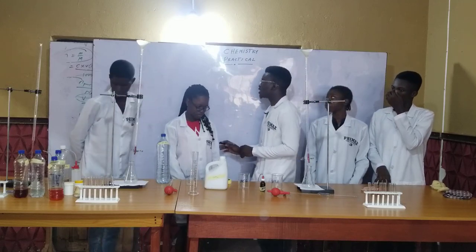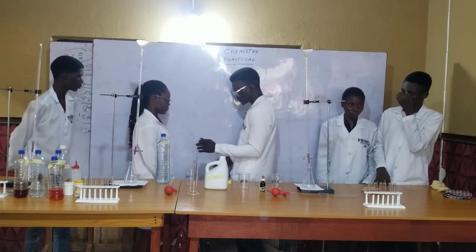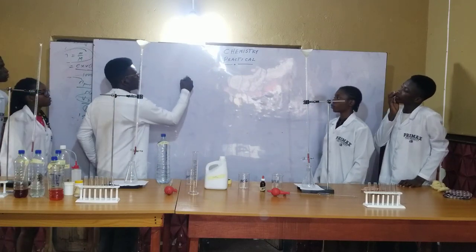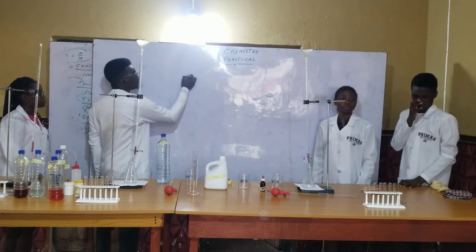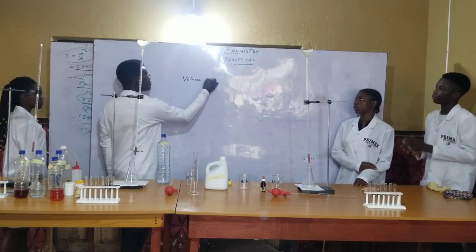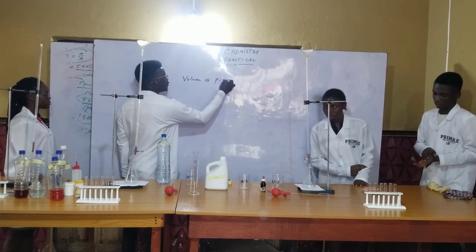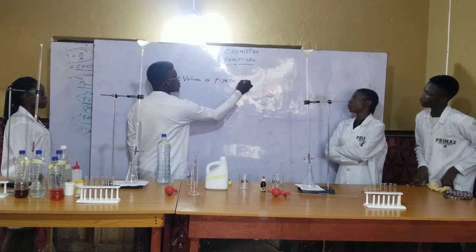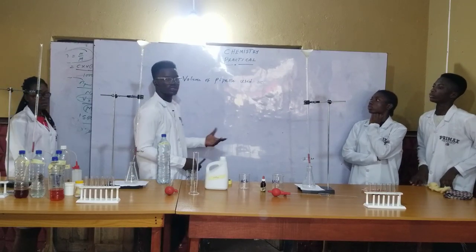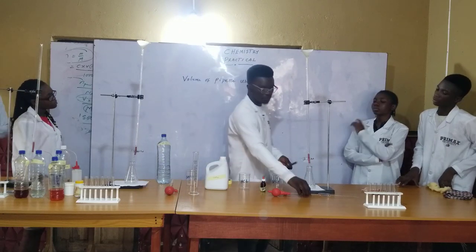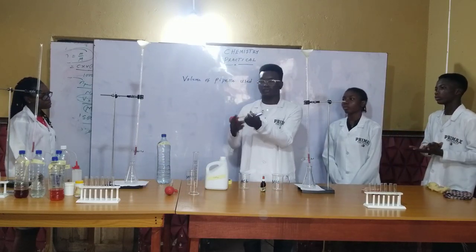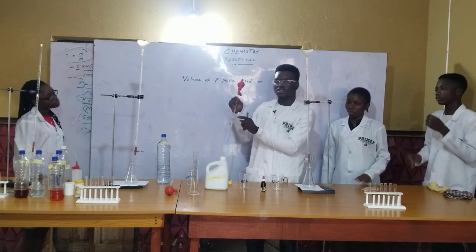You must write the volume of pipette used on top of your table. In different laboratories it depends, but the volume of the pipette we are using is 25 cm³. So you record that the volume of pipette used is 25 cm³.